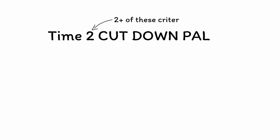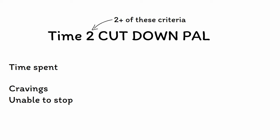The DSM-5 lists 11 distinct criteria for substance use disorders and other forms of addiction, which you can remember using the phrase 'time to cut down, pal.' The 'two' will remind you that two or more of these criteria are required for diagnosis. The rest of the phrase will remind you that patients spend a lot of time using or obtaining the substance, experience cravings or urges to continue using, and are unable to cut down on using the substance even after repeated attempts.